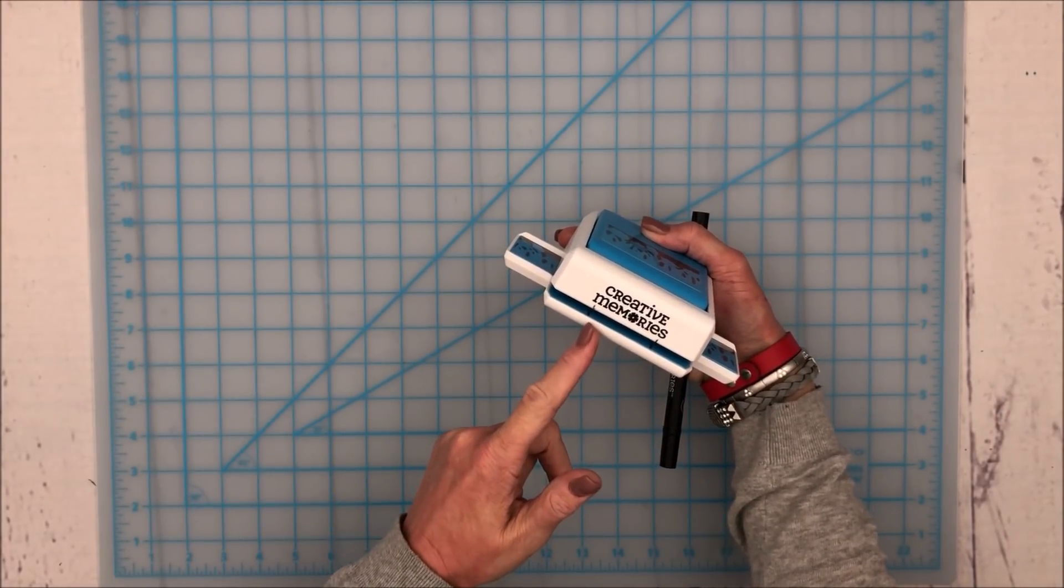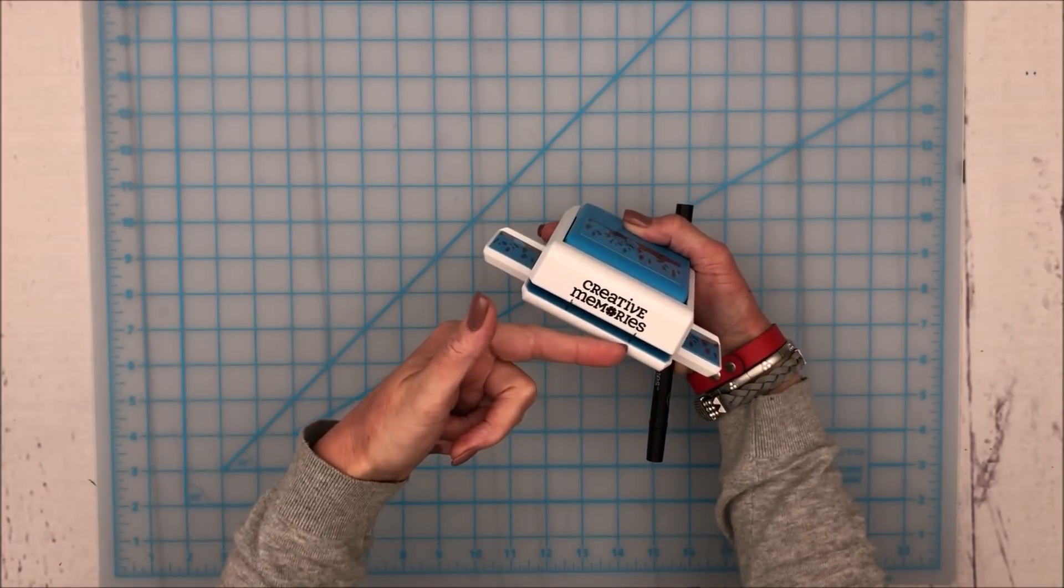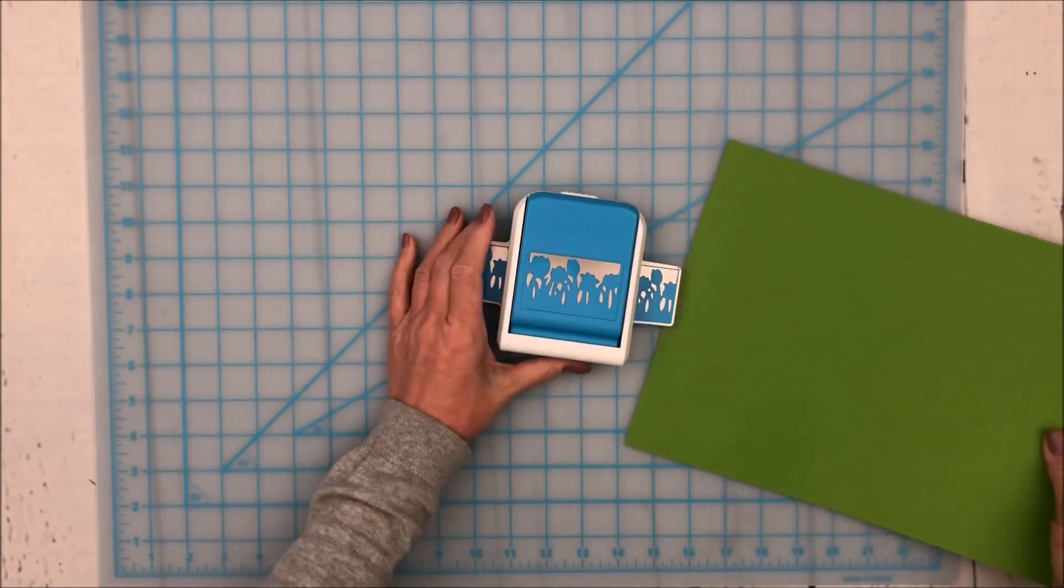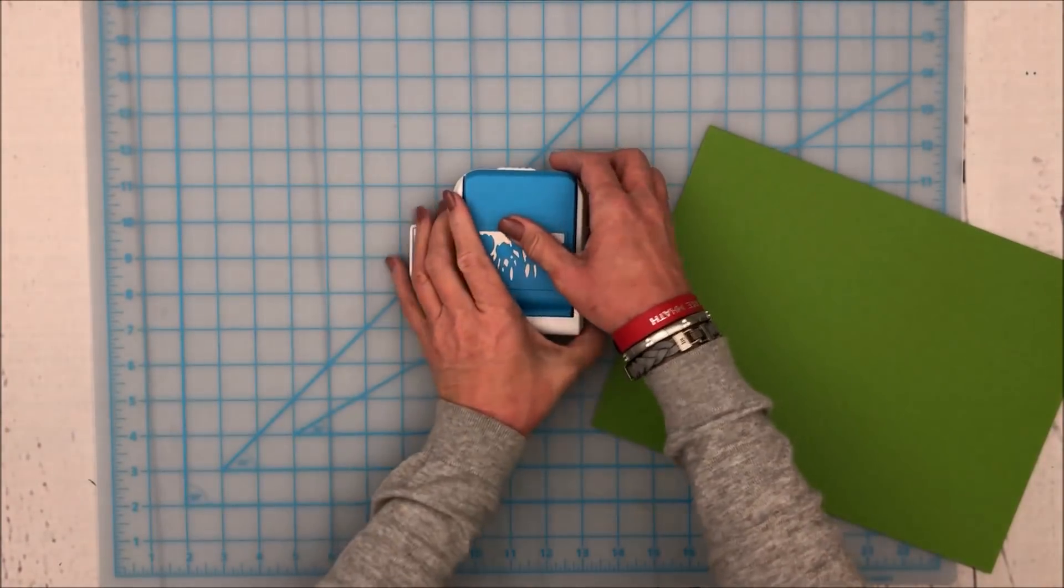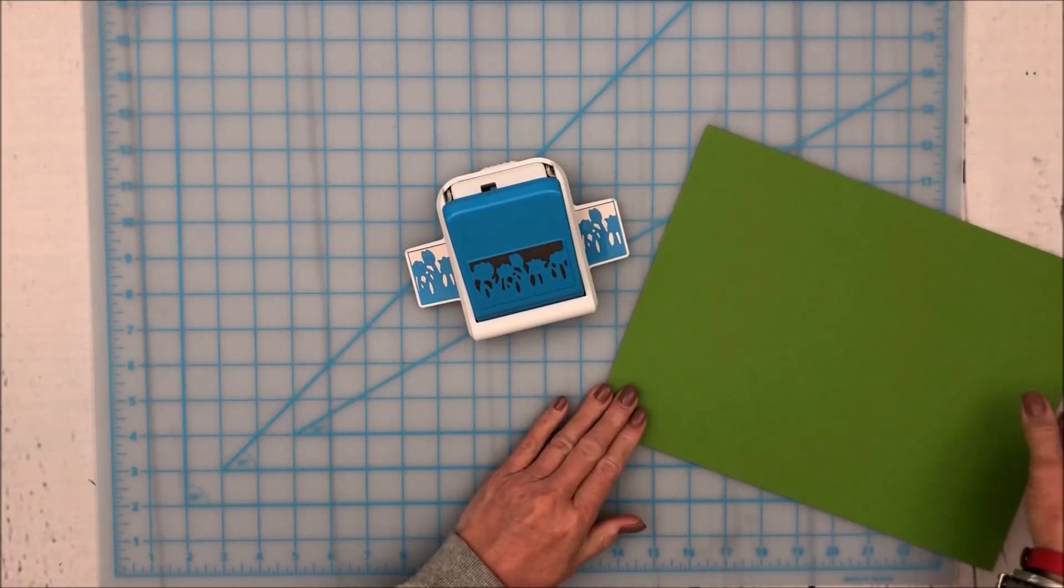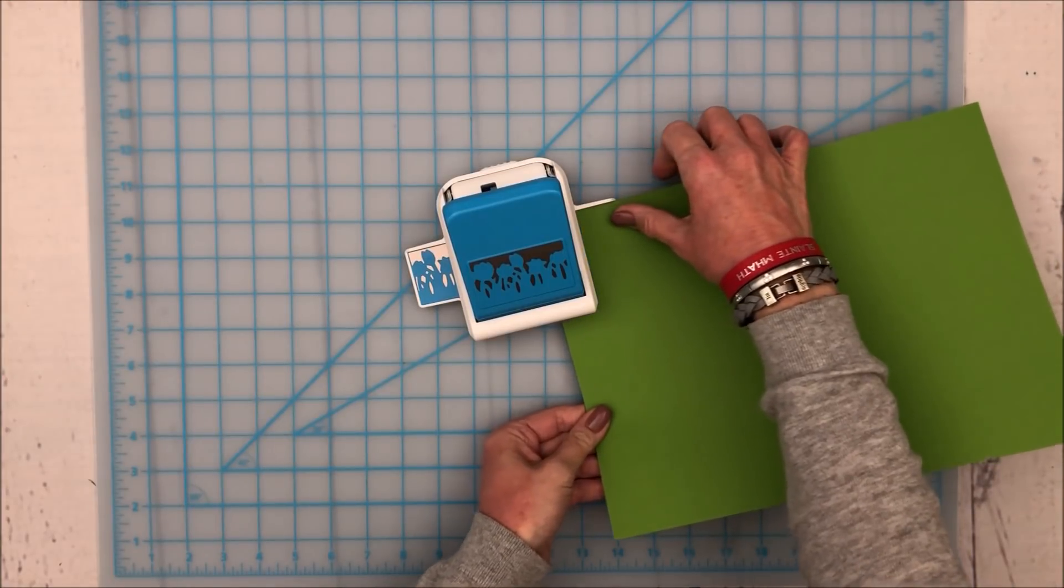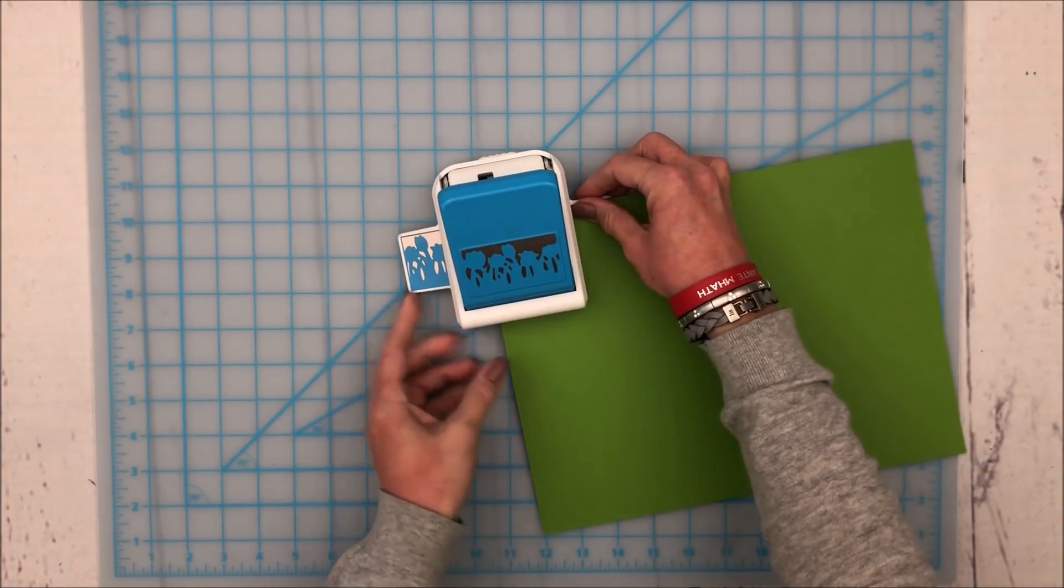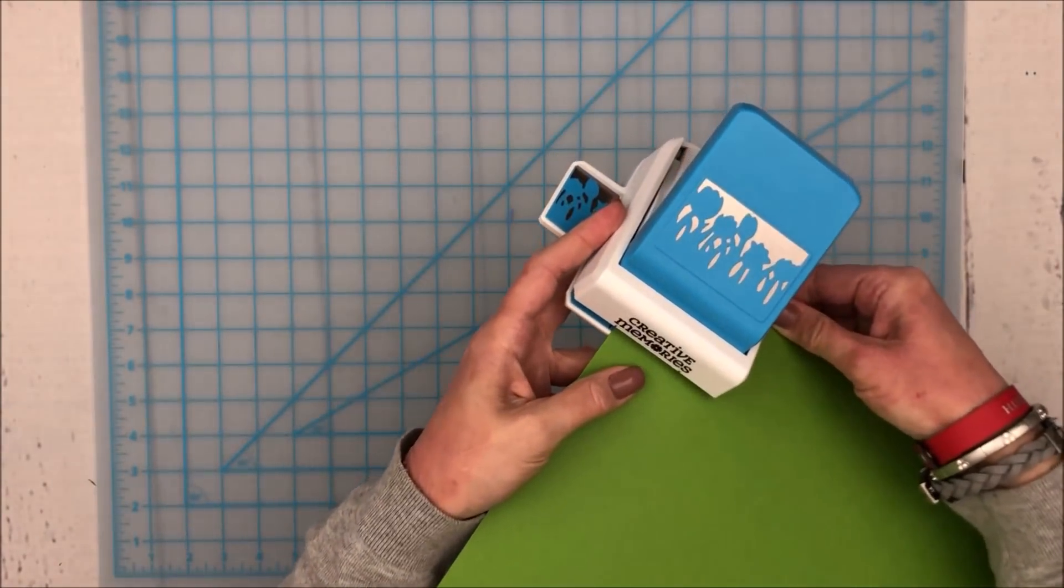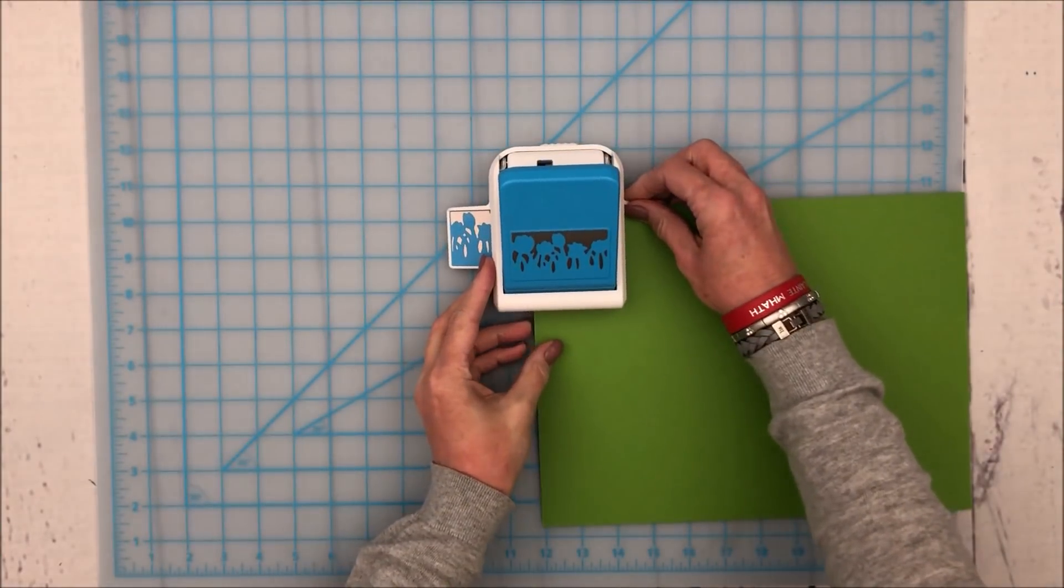You can either start the edge of your paper here and move this way, or start the edge of your paper there and move that way. So I've got some leaf green cardstock here. I'll just undo my punch and I'm going to start it this way. So I place my cardstock on the base plate and slide it in until it lines up with the mark that I've created.